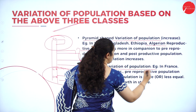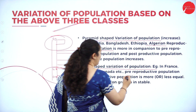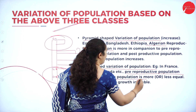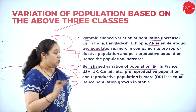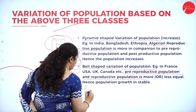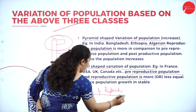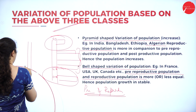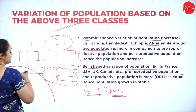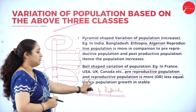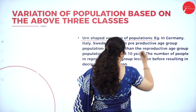Next is bell-shaped variation of population. In countries like France, USA, UK, and Canada, the pre-reproductive and reproductive populations are more or less equal, and the post-reproductive is a little lesser. Here the population growth is stable, and we get a bell shape.